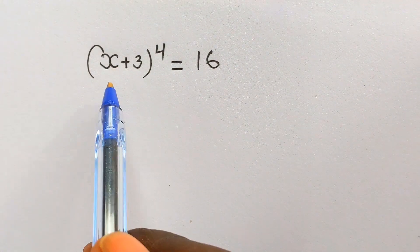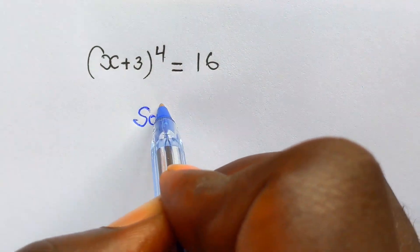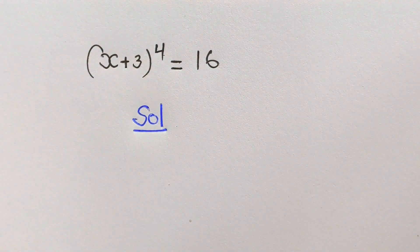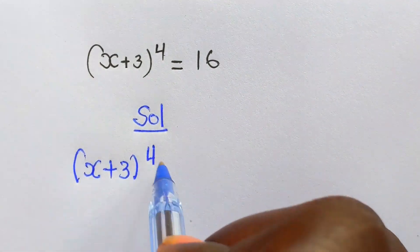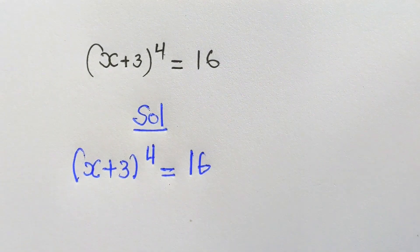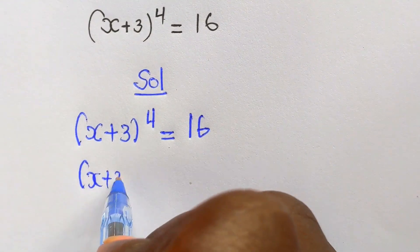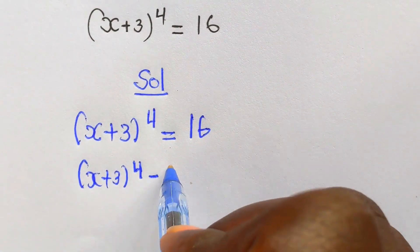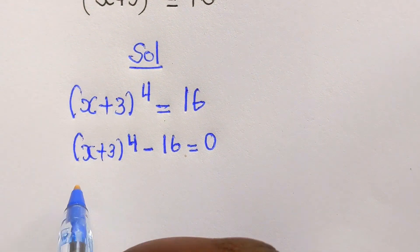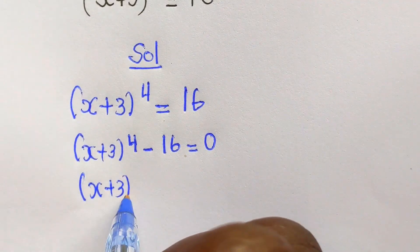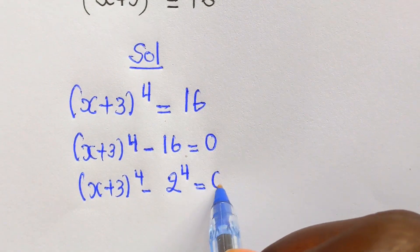We have the question: (x + 3)⁴ = 16. For the solution, we copy what we have — (x + 3)⁴ = 16 — then rearrange to get (x + 3)⁴ - 16 = 0. We can rewrite this as (x + 3)⁴ - 2⁴ = 0.